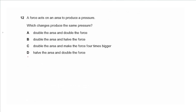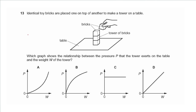Question 12 says a force acts on an area to produce a pressure. Which changes produce the same pressure? Doubling the area and doubling the force. Pressure equals force divided by area — if you multiply by two on both numerator and denominator they cancel out and you get the same pressure, so this is correct. Choose A.